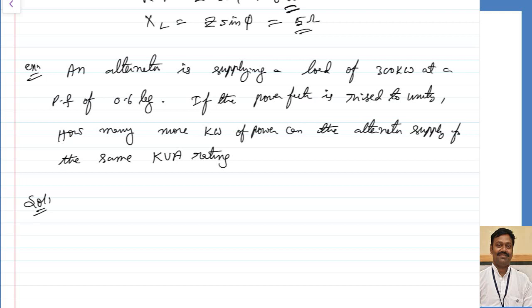The insulation depends on voltage, and the losses depend on the current passing through the circuit. That is why the rating of any machine is always given in kVA or volt-amperes, never in kilowatts. The rating depends only on heating and insulation strength of materials. For a given kVA rating, the machine can supply more kilowatts of active power if the power factor is higher.